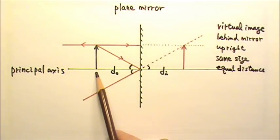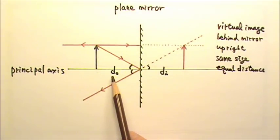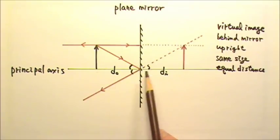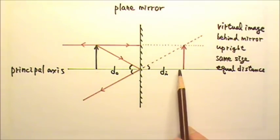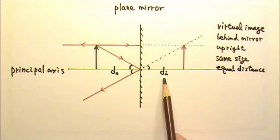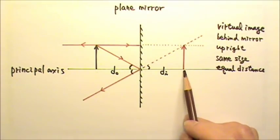The distance between the object and the mirror is called object distance DO. The distance between the image and the mirror is called image distance DI. As you can see, the image formed by a plane mirror is equal distance behind the mirror.